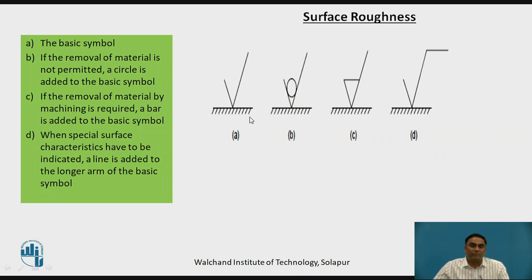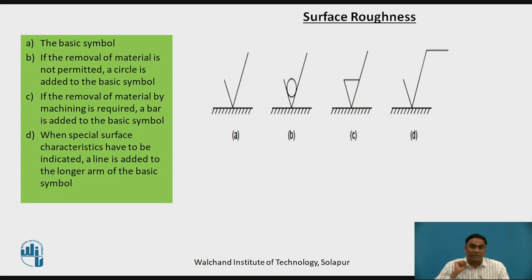The first symbol A indicates the basic symbol. The second symbol B indicates when removal of material is not permitted — a circle is added to this symbol. For example, in casting cases, the outside surfaces are generally not finished and machining is not required. In that case, we can add this type of symbol, indicating there is no need of machining on those surfaces.